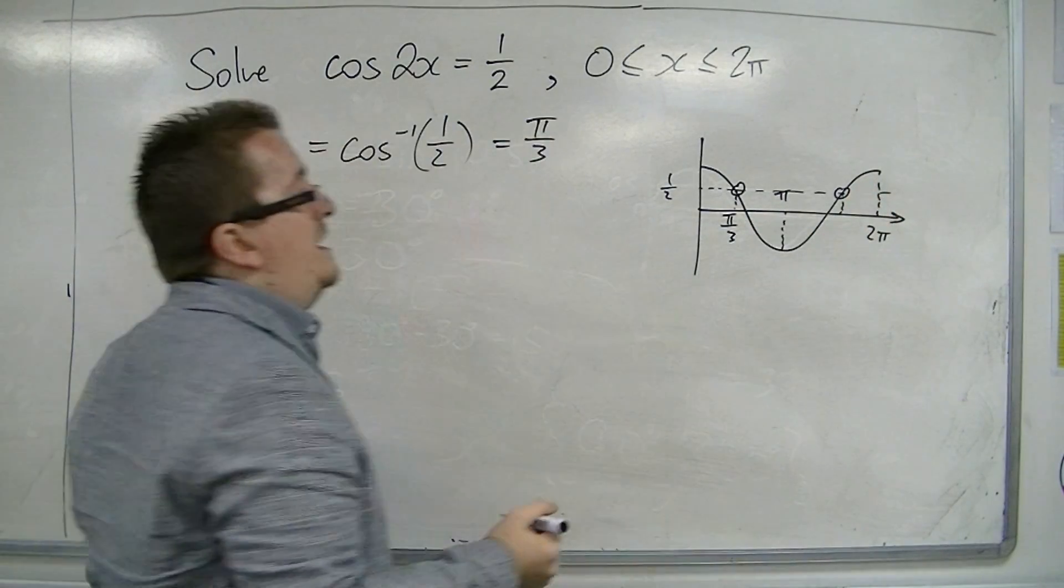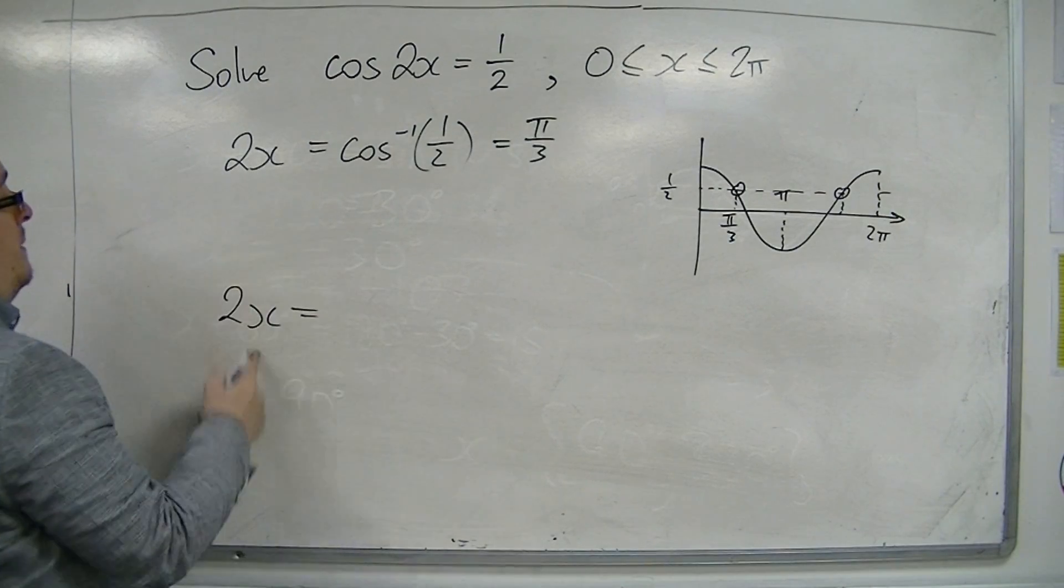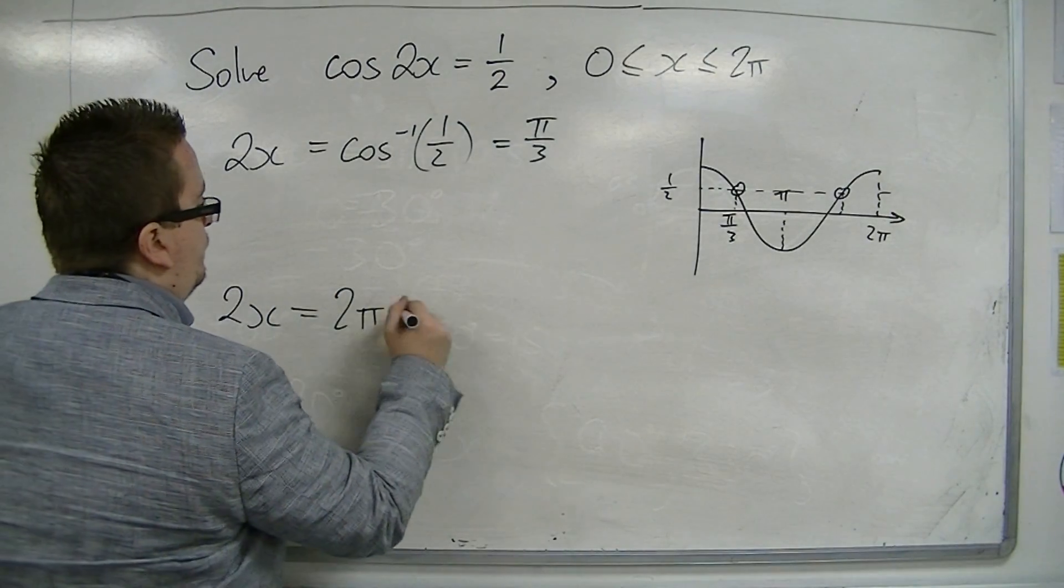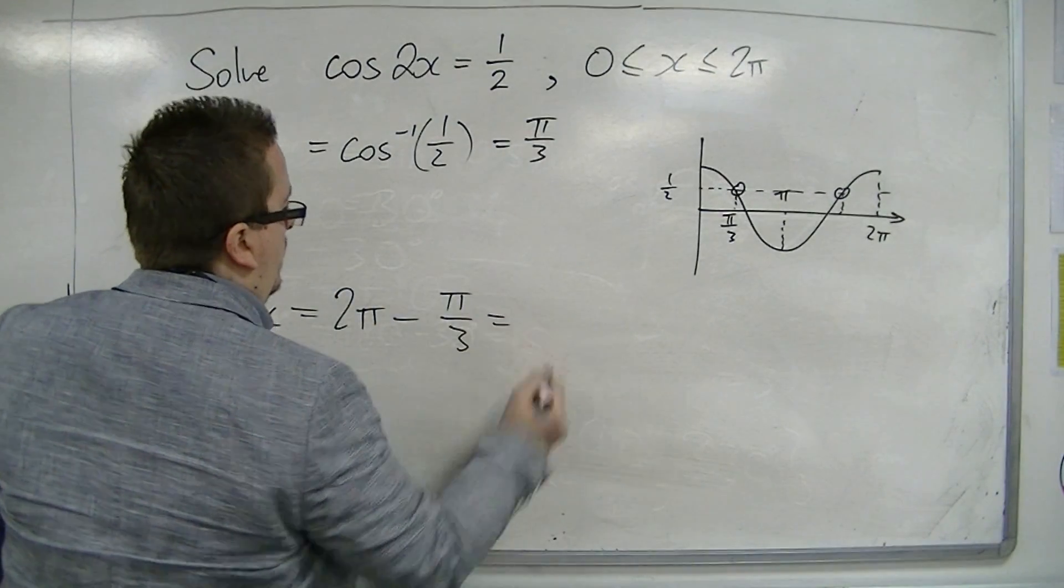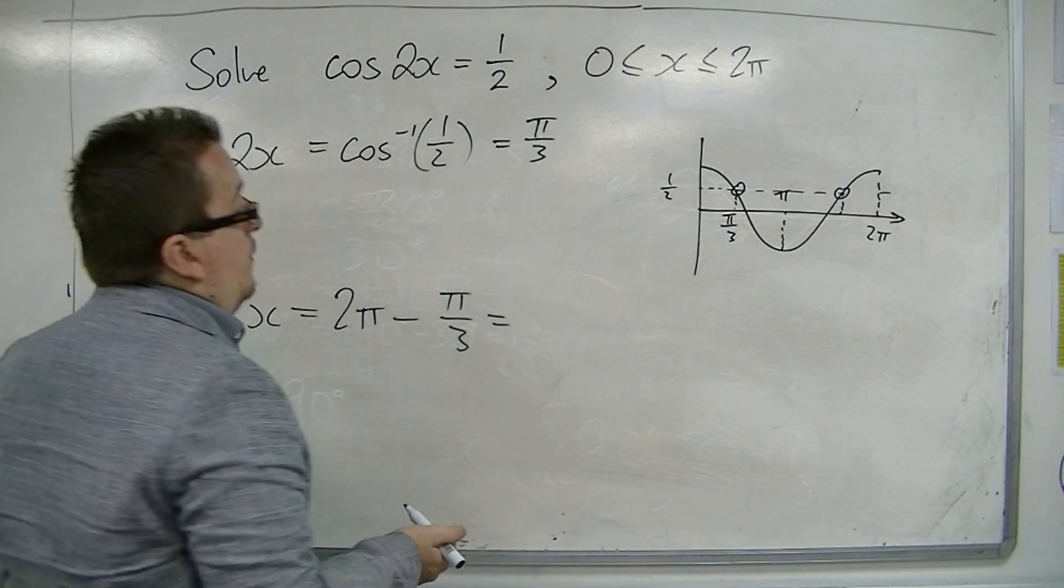So my other solution is 2 pi take away pi over 3. And notice how I'm keeping the 2x. So that would be 5 pi over 3.